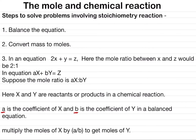Today we are going to study about the mole and chemical reactions. When reacting chemicals together, we may need to know what mass of each reactant to use so that they react exactly and there is no waste. To calculate this, we need to know the chemical equation, which shows us the ratio of moles of the reactants and products — the stoichiometry of the equation.